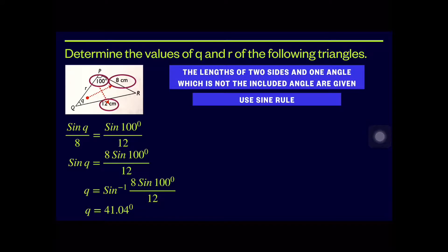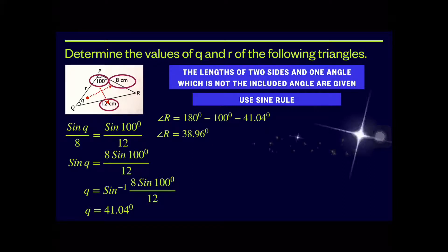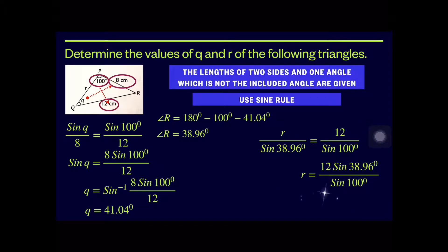Before finding the length of r, we need angle R. Angle R = 180° − 100° − 41.04° = 38.96°. After finding angle R, we apply the sine rule to find side r: r/sin 38.96° = 12/sin 100°. Therefore, r = 7.663 centimeters.